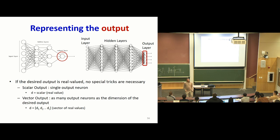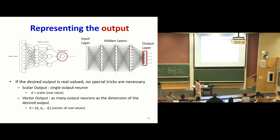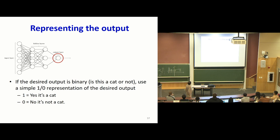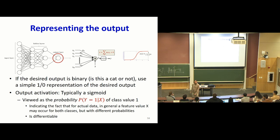The output: if the network is performing binary classification, the input either belongs to a class or it doesn't, so you can use a simple 0, 1 representation. The desired output of the network is going to be either 0 or 1. If the desired output is real-valued, no big deal — it's just the value itself. If it's a vector of real values, you can just use the real values directly. But for the binary case, things get a little more hazy: the desired value can be 0 or 1, but the actual value computed uses the sigmoid activation, which continuously goes from 0 to 1.